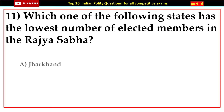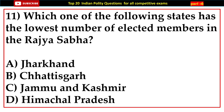Question number eleven: Which one of the following states has the lowest number of elected members in the Rajya Sabha? Options: A) Jharkhand, B) Chhattisgarh, C) Jammu and Kashmir, D) Himachal Pradesh.